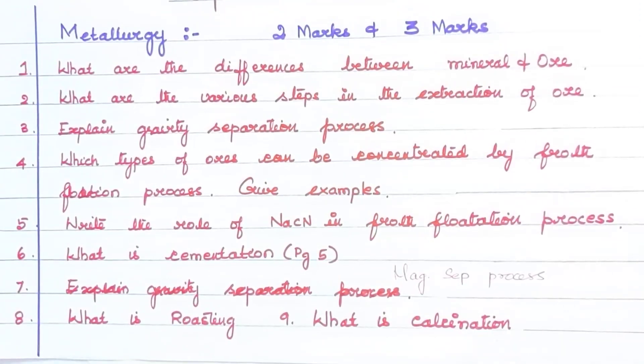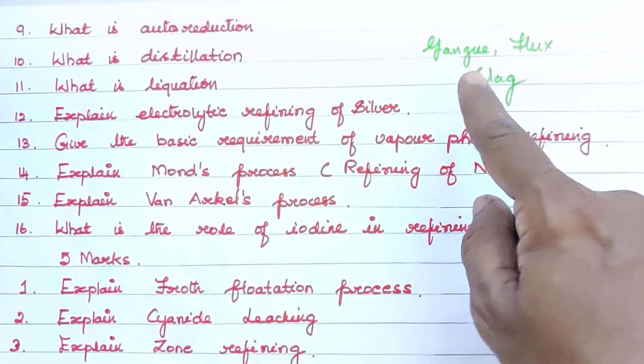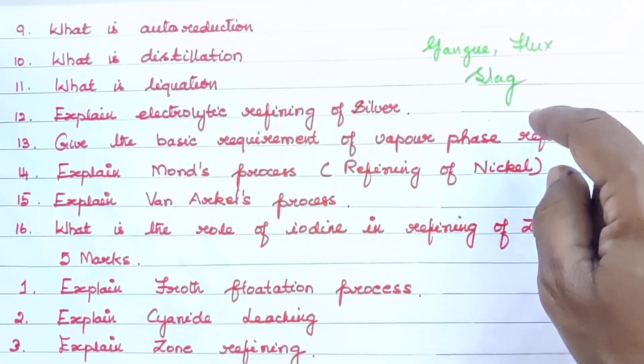Next question, what is roasting? Then, what is calcination? This question is important. These are important questions. What is the gang? Flux? Slag? What are the examples?